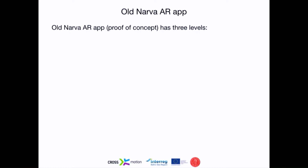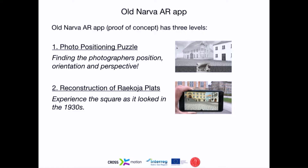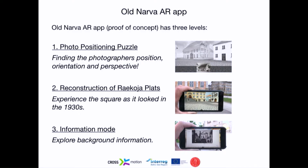Two game elements were borrowed from analog games, not from computer games. The application we developed first as a prototype, now published on the App Store, has three levels. First, a photo positioning puzzle where you find the orientation and position of each photo. Then it's a reconstruction as a kind of reward - you get the full reconstruction of the square the way it looked in the 1930s according to the photographs. You can also pause this reconstruction, which has animations. Then you access an information layer where, using spatially distributed hypertext links, you can access background information about different buildings and events.